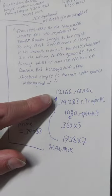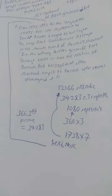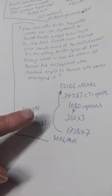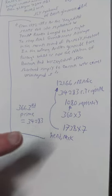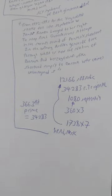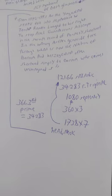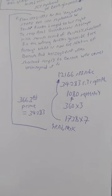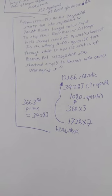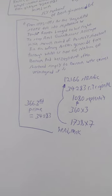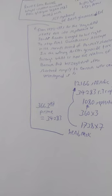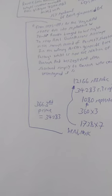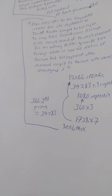So that equals 12,166 Satanic, 34,283 reverse trigonal, and 1,080 subtenary. Now 1,080 is 360 times 3. 1,738 times 7 is 12,166, and the 36,63rd prime is 34,283.